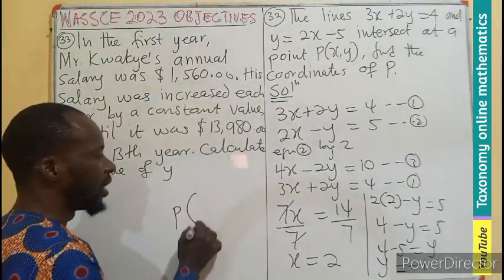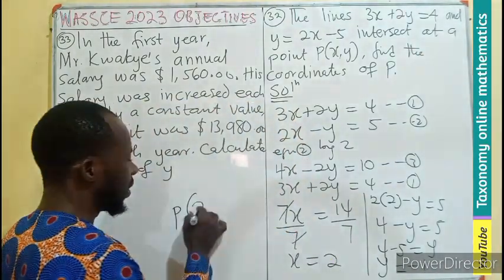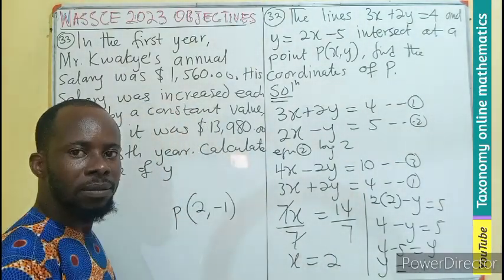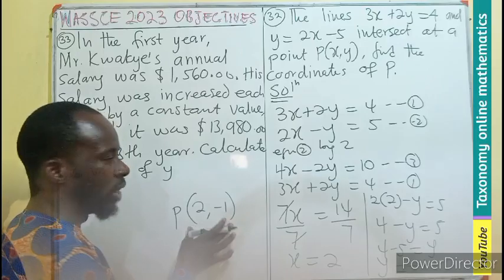So the point P, the value of x is 2, the value of y is negative 1. So that is the point of intersection.